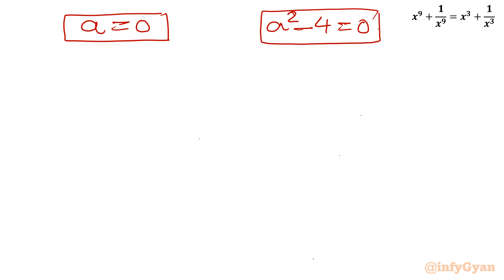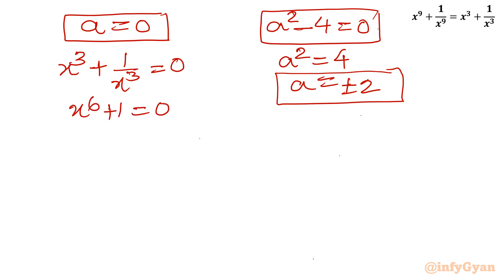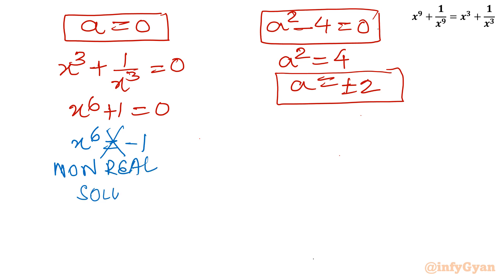Let us solve. From a² - 4 = 0, we get a² = 4, so a = ±2. For the first equation a = 0: substituting back, x³ + 1/x³ = 0. Taking LCM gives x⁶ + 1 = 0, so x⁶ = -1. An even power equals a negative value — non-real solution. So we reject this.